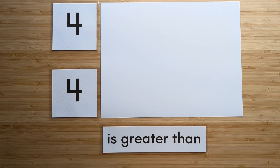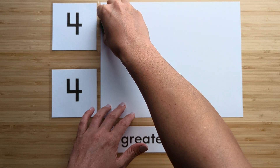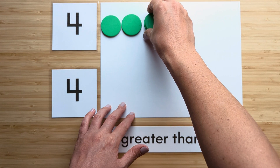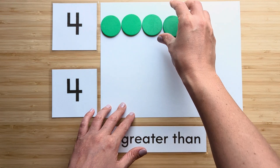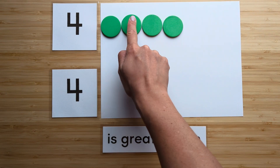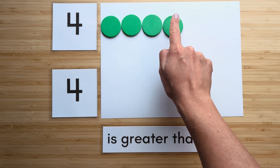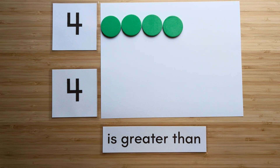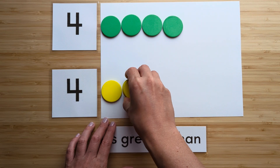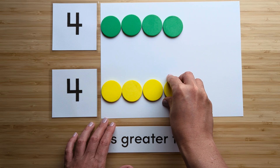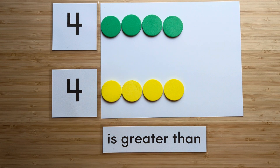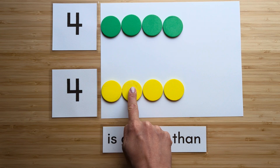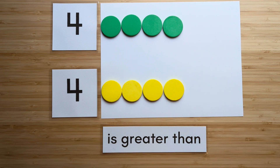Make the number four. Point and count: one, two, three, four. Make the number four. Point and count: one, two, three, four.